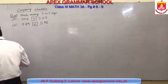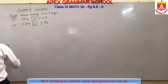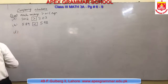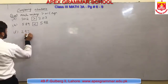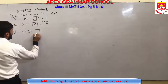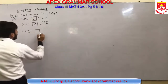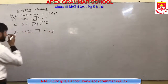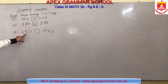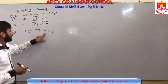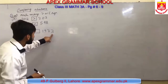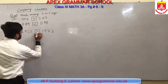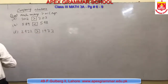I am going to solve part F for you. This is 2922, empty box, and next is 1933. The first number is 2922 and the next number is 1933. Obviously the first number is greater, so we will place the greater than sign here.